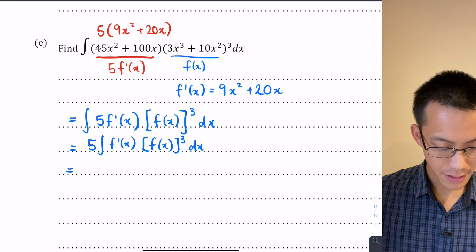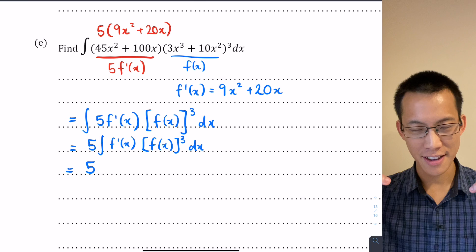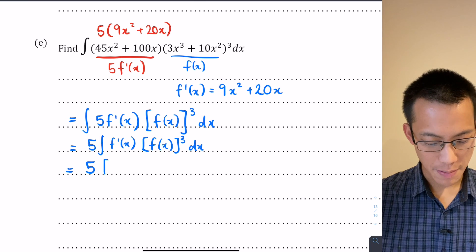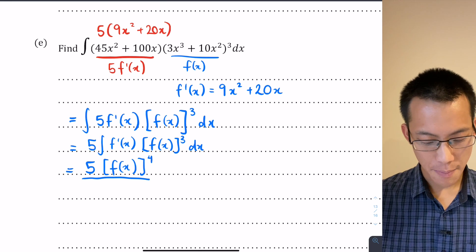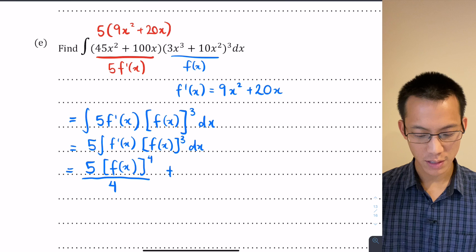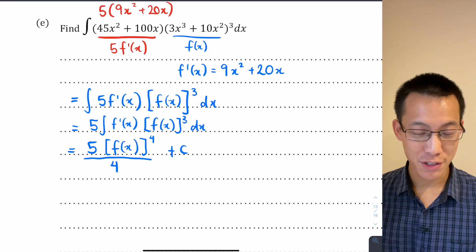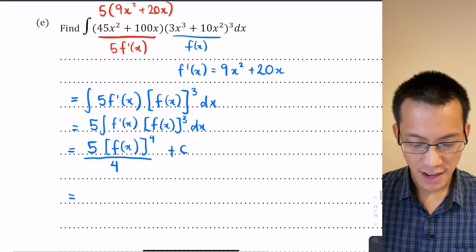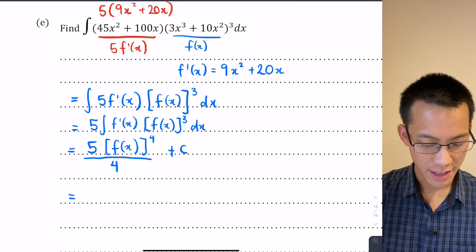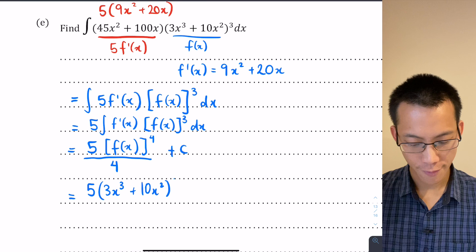So if f(x) = 3x³ + 10x² and f'(x) = 9x² + 20x, I rewrite the entire integral using f(x) notation: 5 lots of f'(x) times [f(x)]³. Integrating this, I raise the index of f(x): the power goes up from 3 to 4, divide by that new index 4, plus a constant of integration since this is an indefinite integral. Then I substitute back: the answer is 5(3x³ + 10x²)⁴ / 4 + C.